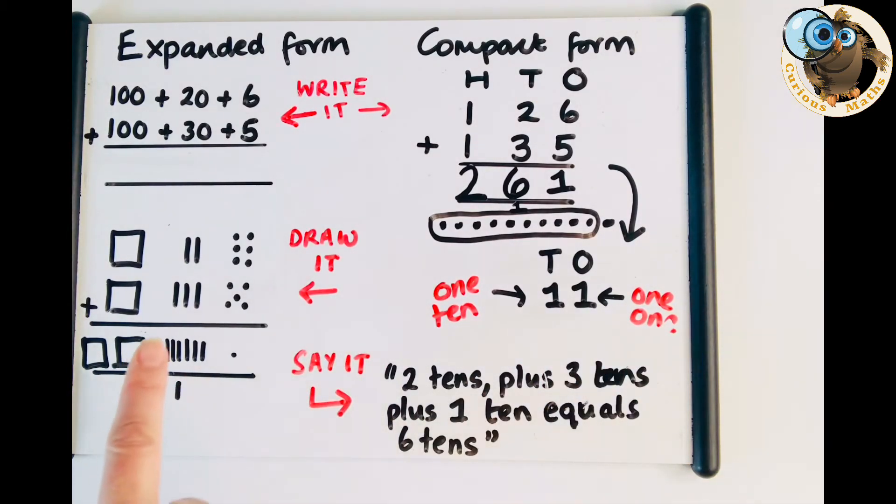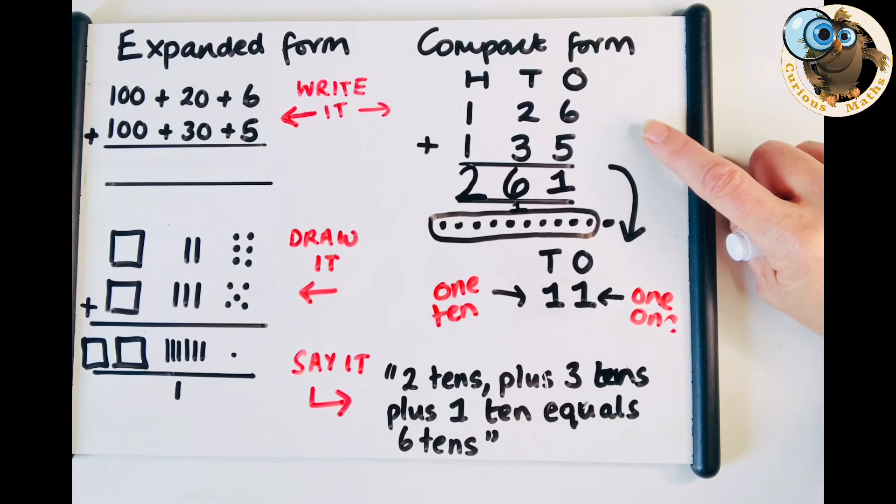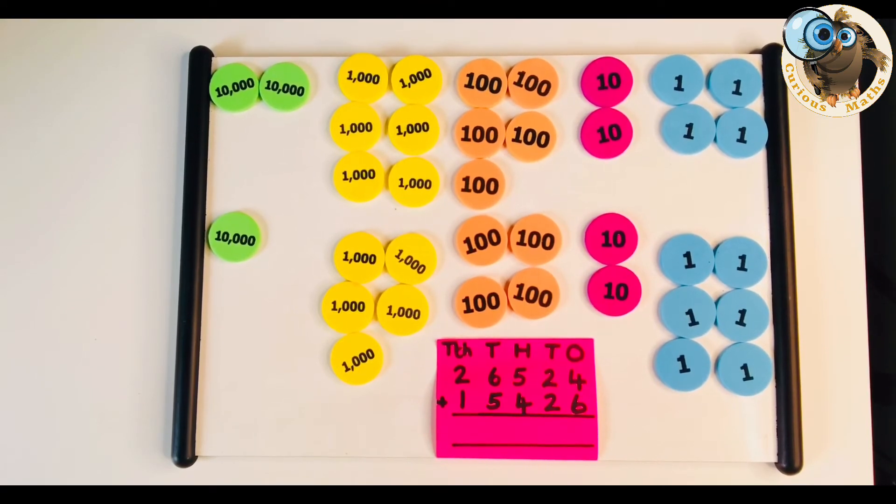And I think you can see how if you go through the build it draw it write it say it method by the time you get to the write on a compact form all this experience of draw it and build it is really going to help. This is a harder question again and it's an example of the type of question that if your child's in year five or six or if you're a year five six teacher this is the kind of question they have to do so adding numbers with more than four digits. So I'm absolutely passionate about keeping the build it draw it write it say it right through key stage two because I really do think it makes a difference.